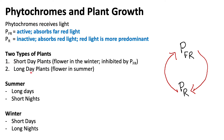When we talk about plants, there are two main types: short day plants and long day plants. Short day plants are the ones that will flower during winter because they are inhibited by Pfr, whereas long day plants flower in the summer time.